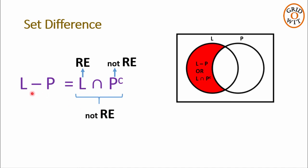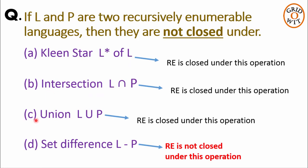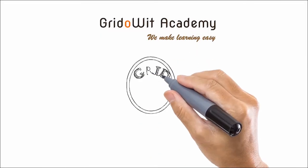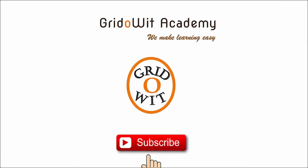So L intersection P complement may not be recursively enumerable. Hence, the set difference L minus P may not be recursively enumerable, meaning recursively enumerable languages are not closed under set difference. Therefore, the answer is option D.